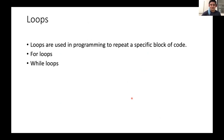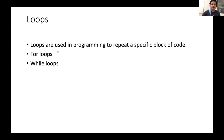Now we're moving on to loops. Loops are used in programming to repeat a specific block of code. One general rule I like to follow is that you shouldn't have the same code more than once right after each other — it might seem easier to copy and paste at the beginning, but you're just introducing more chances for mistakes. For loops and while loops let us run code all at once instead of copying and pasting.